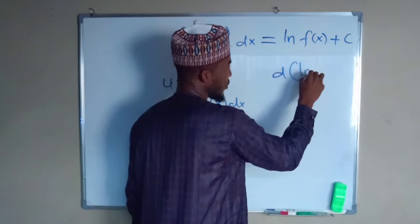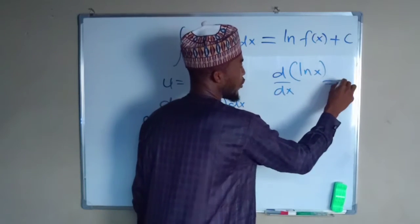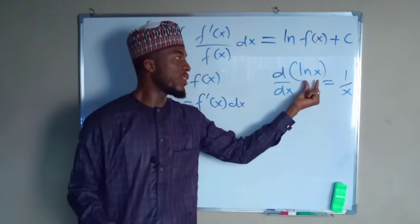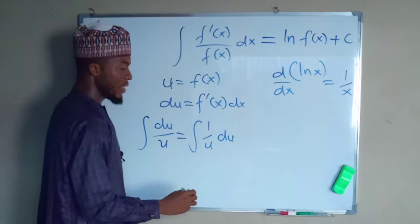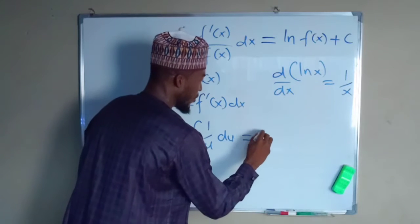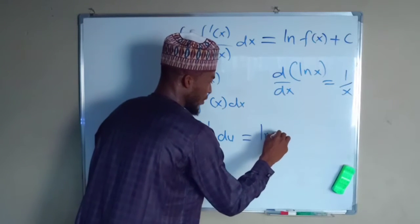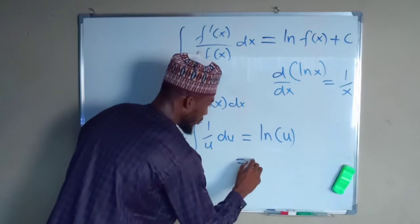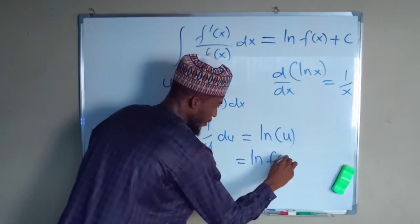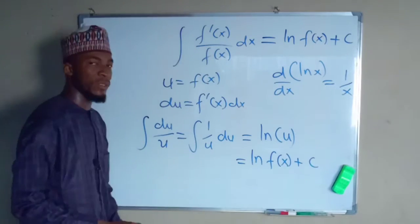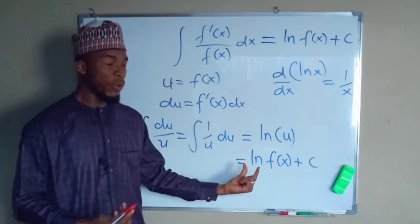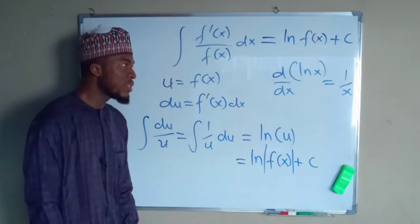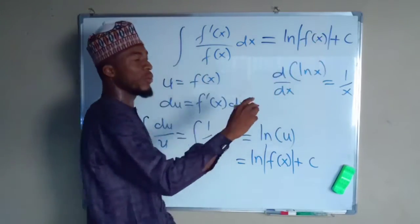This can also be written as the integral of 1 over u du. In differential calculus, if you could remember, the derivative of the natural log of x with respect to x is equal to 1 over x. Therefore, if we integrate 1 over x we get the natural log of x. The same thing here: the integral of 1 over u with respect to u is equal to the natural log of u. Since we let u equal f of x, this is the natural log of f of x plus the constant of integration. But this function could be negative, so to get rid of the negative sign we add the absolute value.